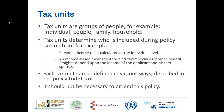Our next definitional policy is our tax units. Tax units are groups of people — for example individual, couple, family, or household — and they determine who is included during policy simulation. For example, personal income tax is calculated at the individual level because the individual is the person liable to pay personal income tax. An income-based means test for a social assistance benefit might depend upon the income of the applicant and his or her spouse, which would be a different tax unit. This is described in the policy TUDIF_ZM, and it should not be necessary to amend this policy.